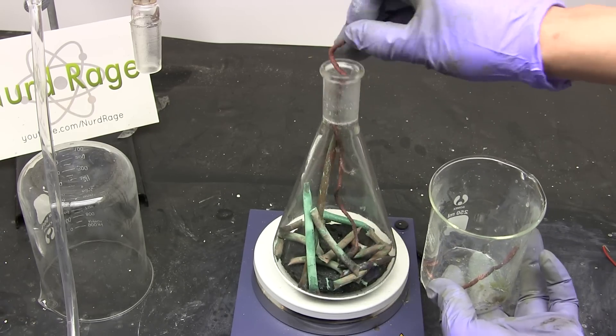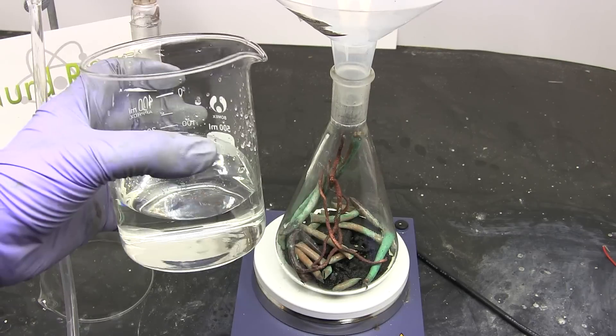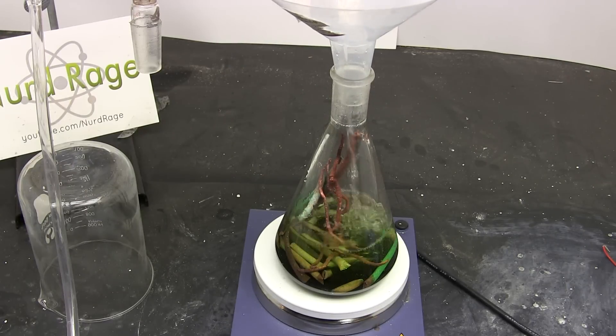I recommend using larger pieces of copper like I am here as it will make it easier to remove the copper later. Now since I distilled out the acid I'm going to add the acid back in.